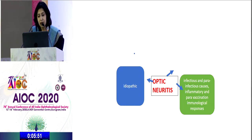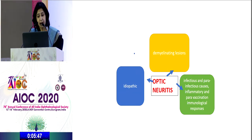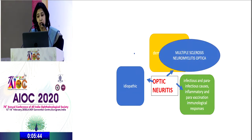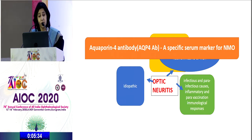As we know, optic neuritis is inflammation of the optic nerve, which can be idiopathic, or it can be due to demyelinating lesions like multiple sclerosis and neuromyelitis optica. It's important to differentiate between the two, and to help us in this is aquaporin-4 antibody, which is a highly specific and sensitive serum marker for neuromyelitis optica.